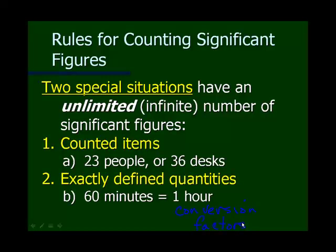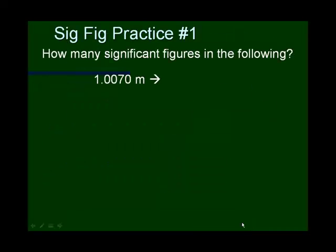Now's your turn to practice. Pause the recording, try to figure these out, then unpause to check your answers. For the first example: 1.0070 meters. Any number that's not a zero is significant, so those two digits count. The two zeros are sandwiched, so they count. The zero on the end is trailing and there is a decimal point, so it counts — a total of five significant figures.